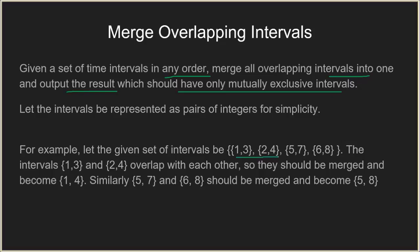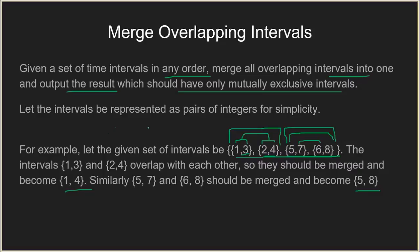For example, the input intervals will be [1,3], [2,4], [5,7], and [6,8]. You have to merge the overlapping intervals. As you can see, [1,3] and [2,4] are overlapping — values from two to three overlap in both intervals — so we merge them into [1,4]. Similarly, [5,7] and [6,8] share six to seven in common, so we merge them into [5,8].